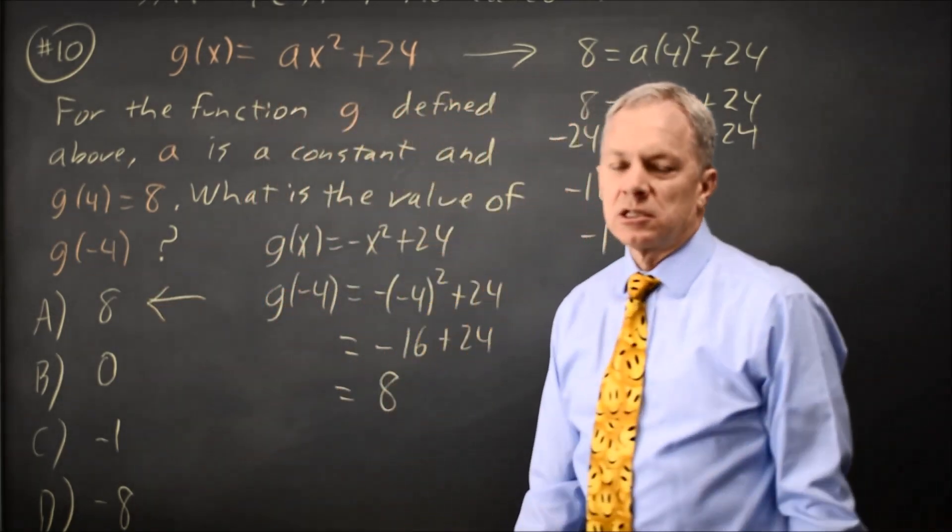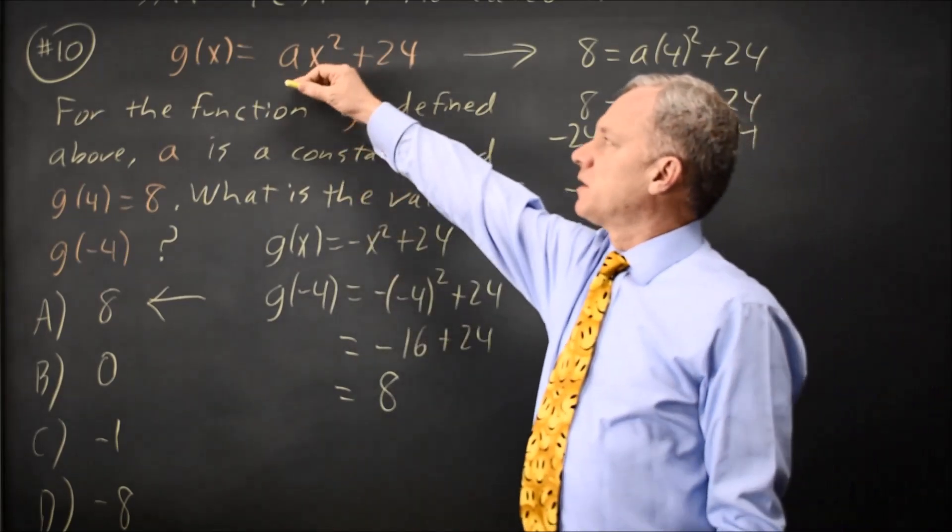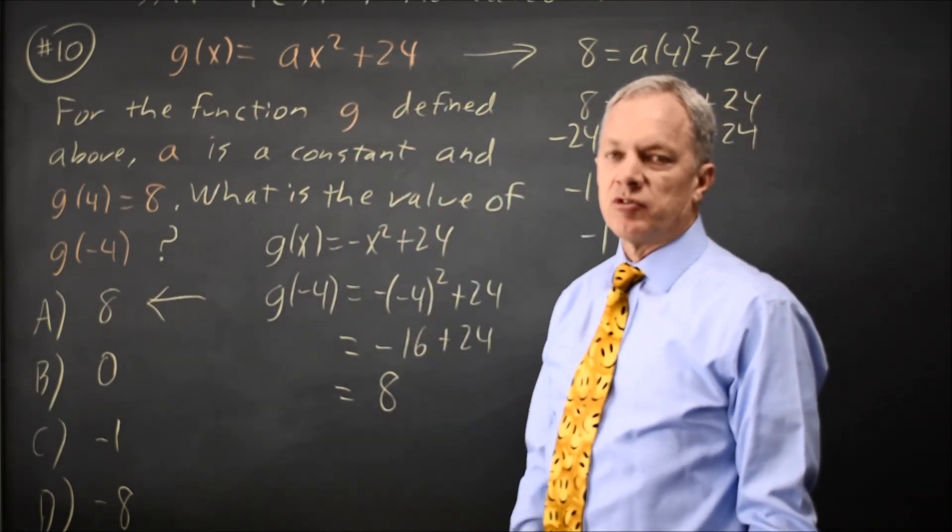A shorter answer: we observe that g of x only has an x squared term and a constant. g is an even function,